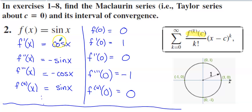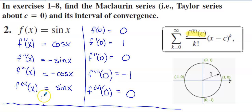The derivative of sine of x is cosine of x. The second derivative is negative sine of x. The third derivative is negative cosine of x. The fourth derivative brings us back to sine of x, so this pattern is going to continue repeating.